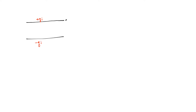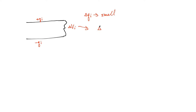I want to start off with parallel plates. I'm going to assume there's a little bit of charge on one plate, plus QI, and negative QI on the other plate. At this instant in time there is going to be a potential difference between the plates, and it's going to be delta VI.